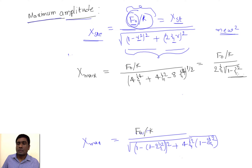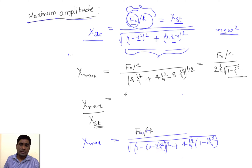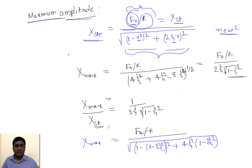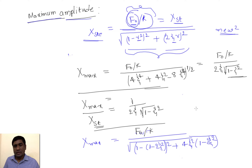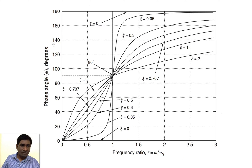So the maximum amplitude x_max divided by x_static (since f₀/k is the static deflection) equals 1 divided by 2ξ·√(1 − ξ²). This is the maximum amplitude formula, provided ξ is less than or equal to 1/√2.